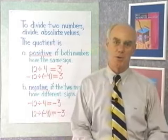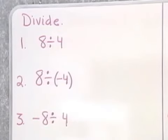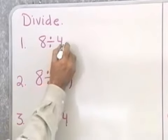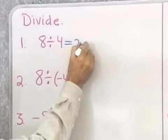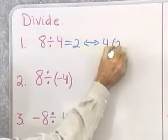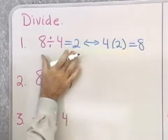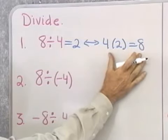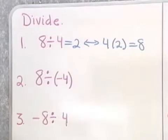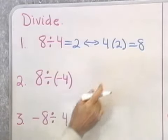Let's go to the board now and work a couple of problems. We want to work these first few problems and show the corresponding multiplication problem, just so that you can see that our rule is the correct one. 8 divided by 4 is equal to 2, because 4 times 2 is 8. Every division problem is accompanied by a multiplication problem with the same numbers.